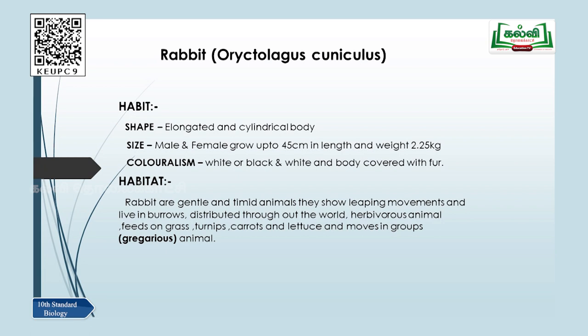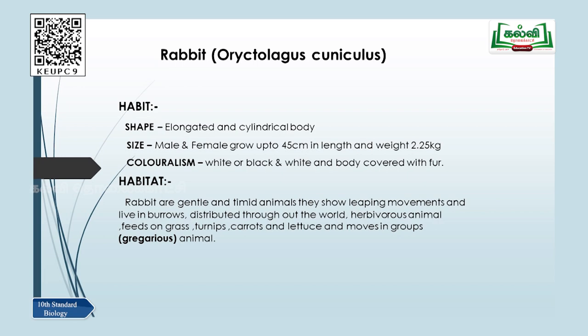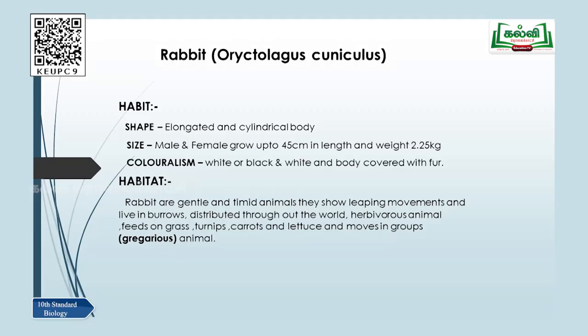Habit means the external appearance. The shape of the rabbit is elongated and cylindrical — elongated means it is long and cylindrical means it is round in shape. The size of the rabbit: both male and female grow up to 45 centimeters in length and weigh up to 2 to 2.5 kilograms. The color is either fully white, fully black, or black and white, and the body is covered with fur.